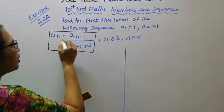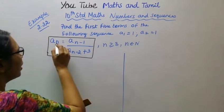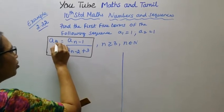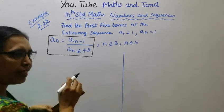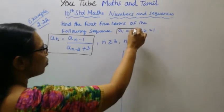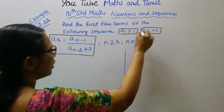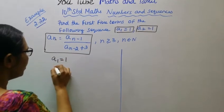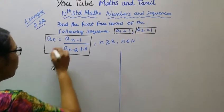We need to find the first 5 terms: a1, a2, a3, a4, a5. We are given that a1 equal to 1 and a2 equal to 1.